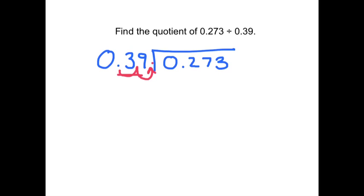This one looks scary, but we can do it the same way. So we want to find how many times does 39 hundredths go into 273 thousandths? Well, again, this makes it more difficult because there's a decimal there. So let's move it over one, two times to the right, so it's not there anymore. And move this one over two times to the right, so that we're fair.